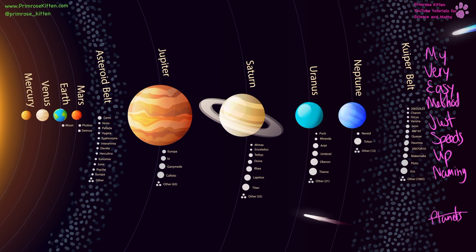Poor old Pluto used to be a planet — it is now a dwarf planet. There is a separate video on why Pluto is now a dwarf planet. Our dwarf planets are located here, here, here, and here — I'm not going to try to pronounce some of those names because I'm very sure I will get it wrong. We have an asteroid belt between Mars and Jupiter, and then another belt of large objects right on the edge.